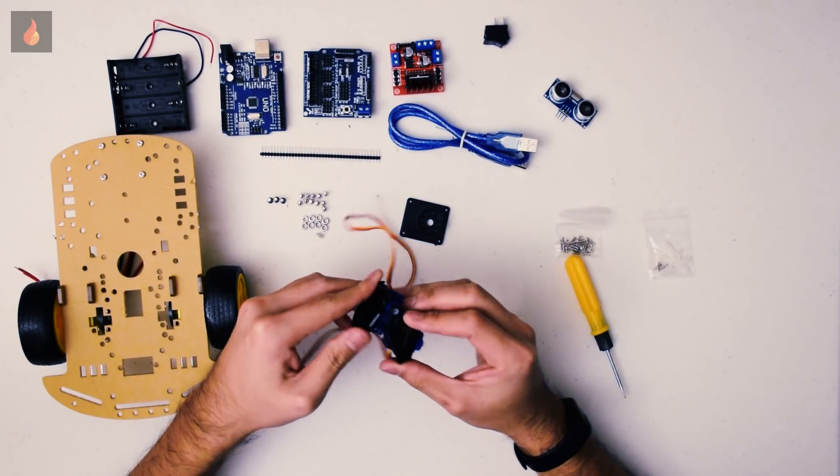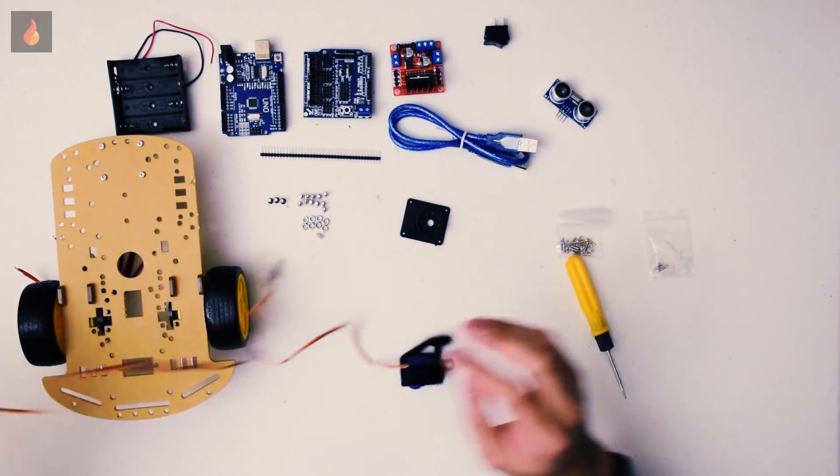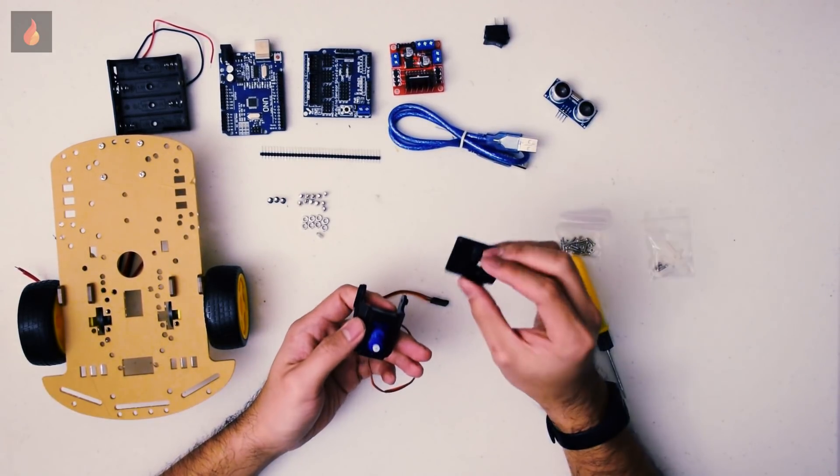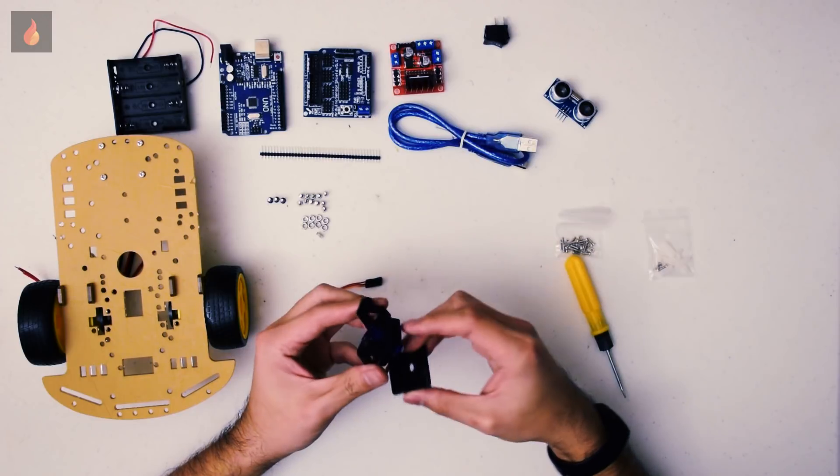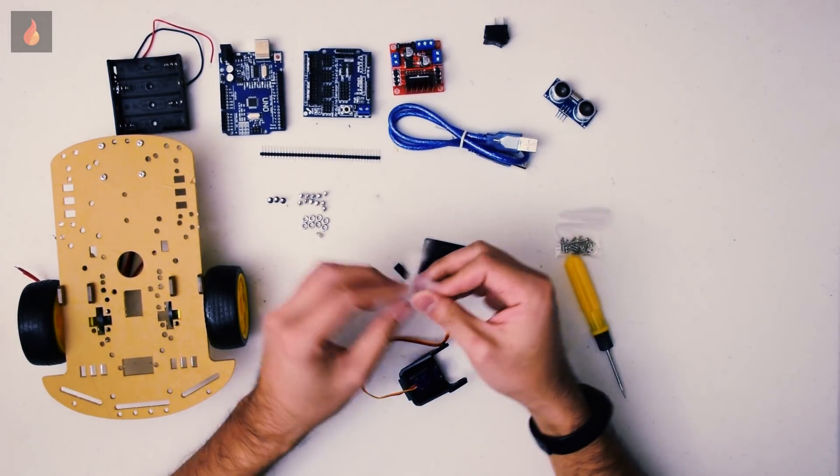But for this kit you don't want this part. So after this we can mount it like this here. So to make it work we need to use one of the arms.